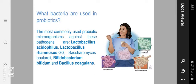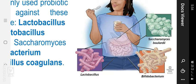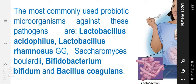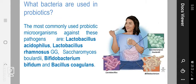Hello students, good morning to one and all. Today's topic is: what bacteria are used in probiotics? The pictures show that internally our bodies have a lot of useful bacteria. For example, Saccharomyces species, Lactobacillus, Bifidobacterium, etc. These occur naturally, and we also get them by eating food materials like yogurt and curd.